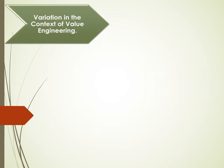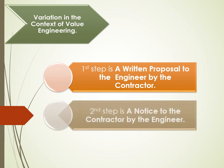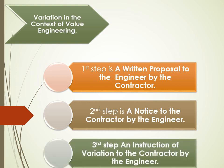Variation in the Context of Value Engineering. The first step is a Written Proposal to the Engineer by the Contractor. The proposal is to: Accelerate Completion, Reduce the Cost of the Project Through Its Lifetime, Improve Efficiency, and Provide Benefit to the Employer. The second step is a Notice to the Contractor by the Engineer. The third step is an Instruction of Variation to the Contractor by the Engineer.